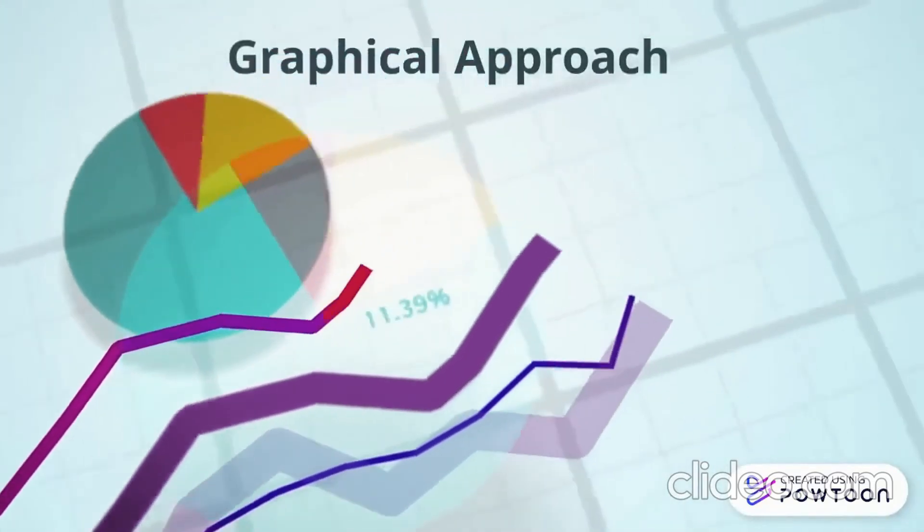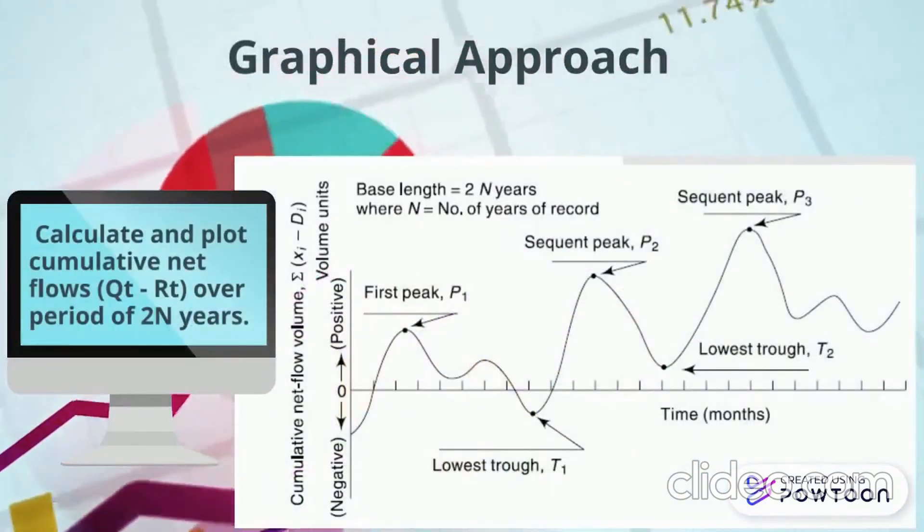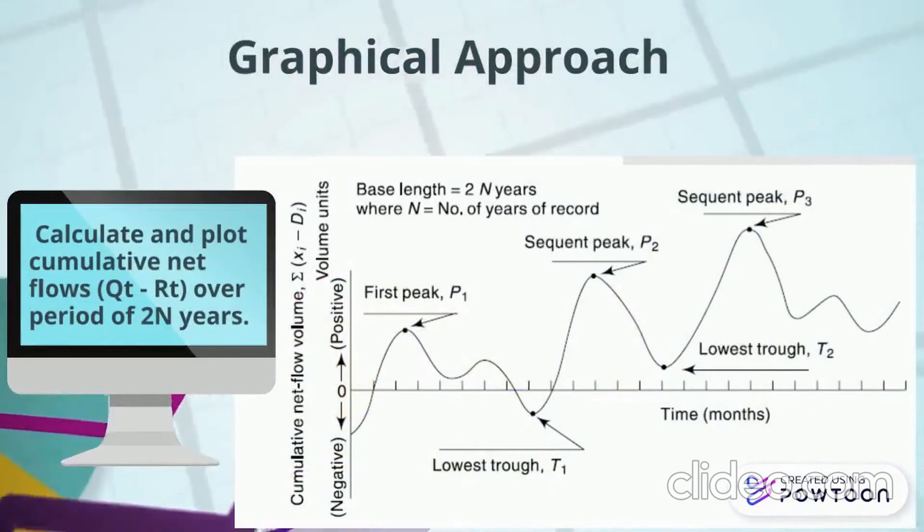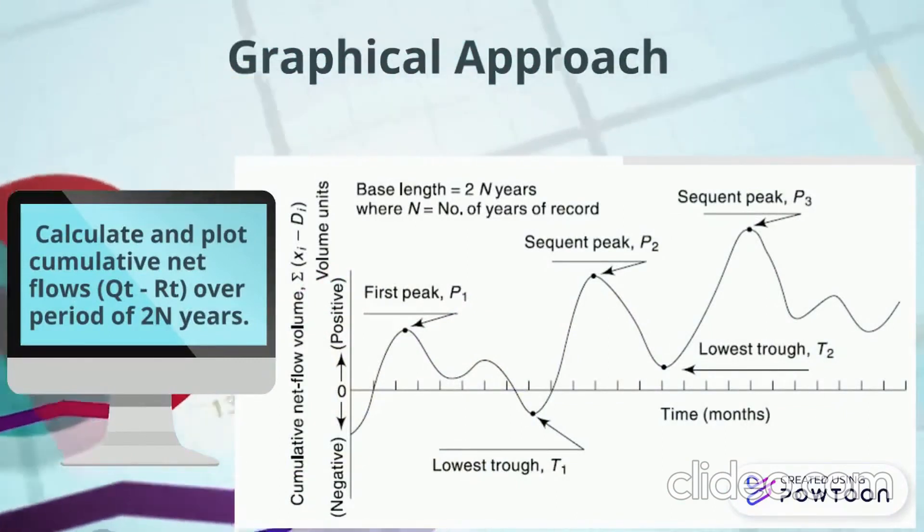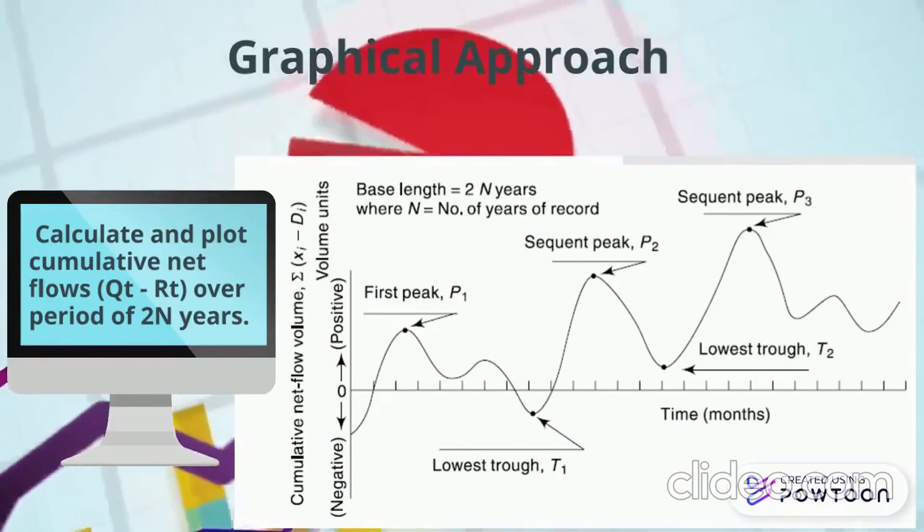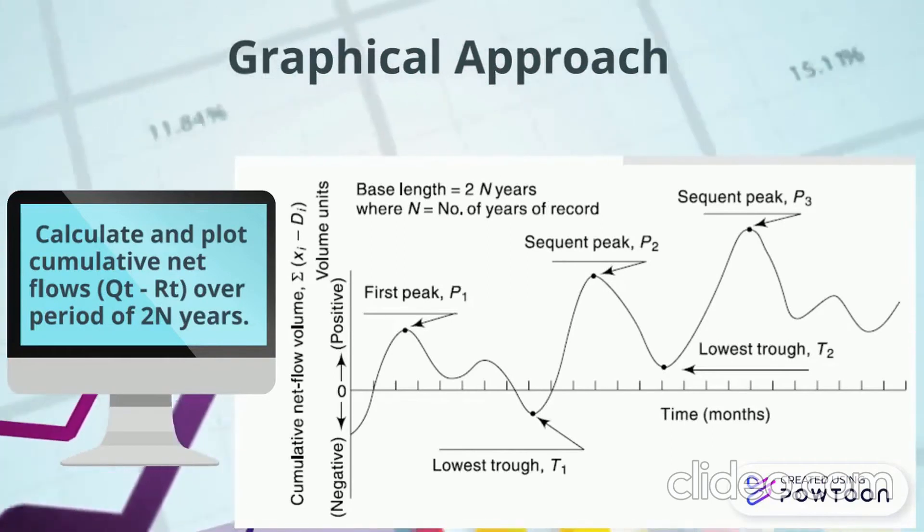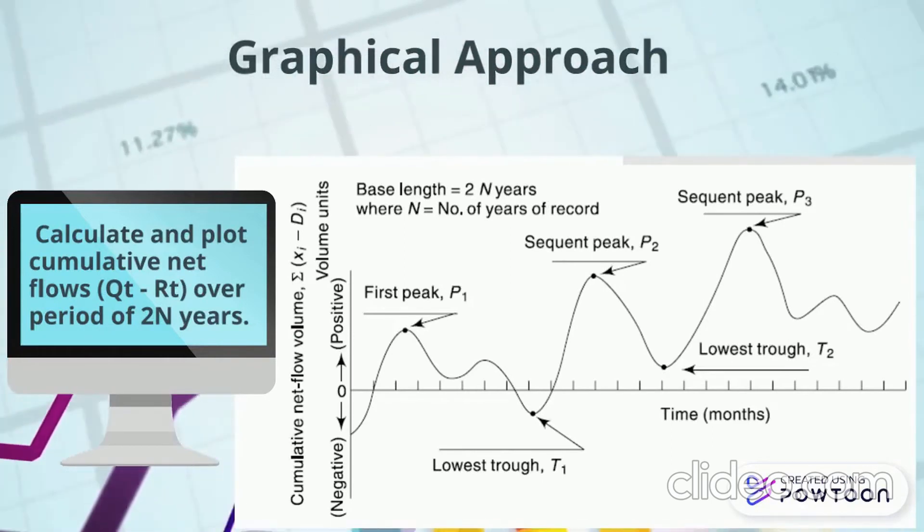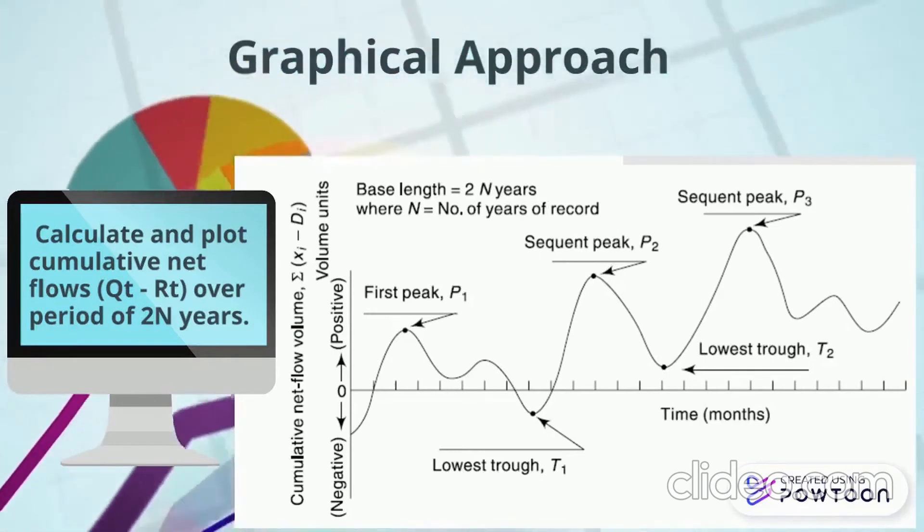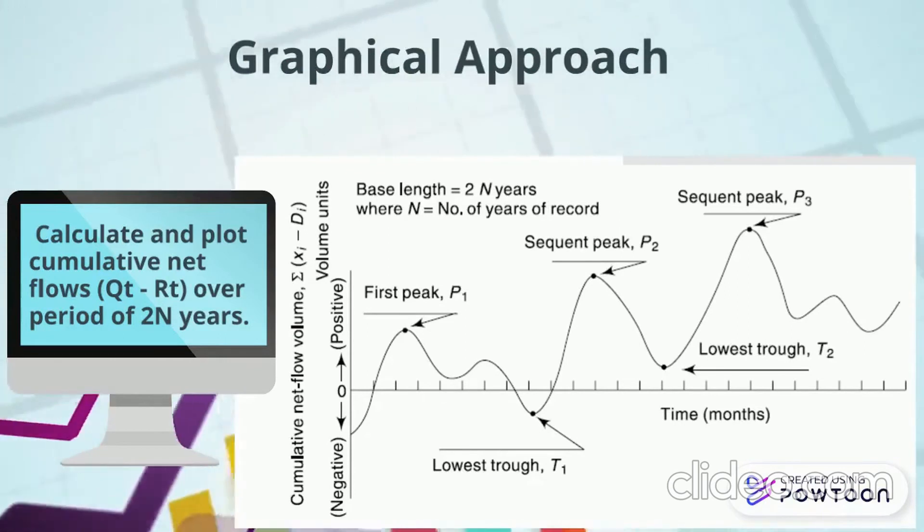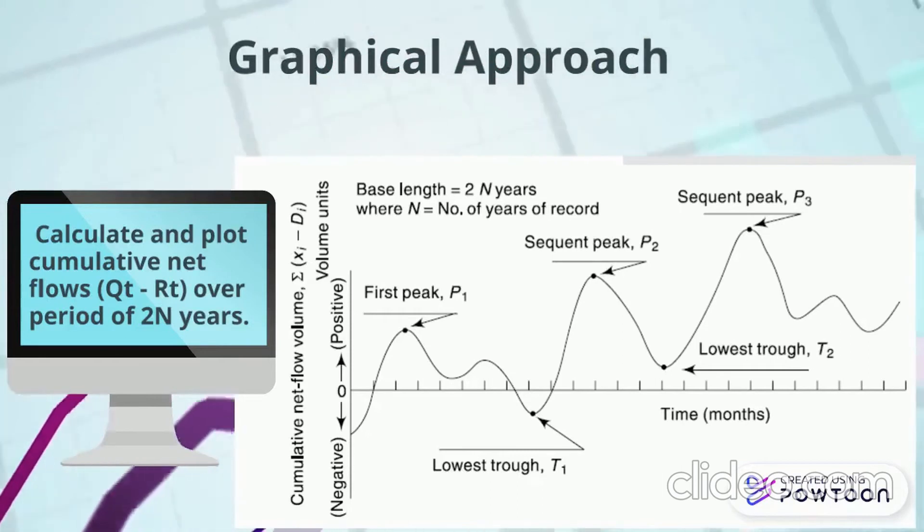Now let us begin the graphical approach of analyzing the data. The first step in the graphical approach is to calculate and plot the cumulative net flow volume versus time. Cumulative net flow is the value of inflow minus outflow for a given interval, and you have to plot this value against a given period of 2n years. So, say if you have inflow and outflow data for 12 months, you will calculate Q1 minus R1, that is the inflow minus outflow for the first month, similarly second month, up till a period of 24 months, and then you will plot this value over 24 months.